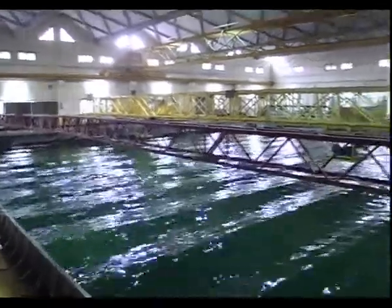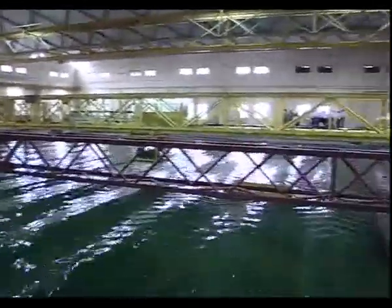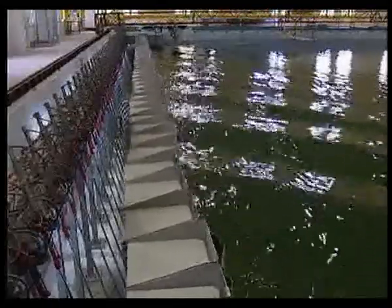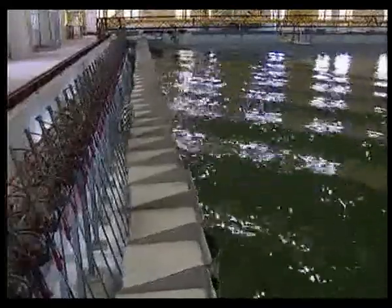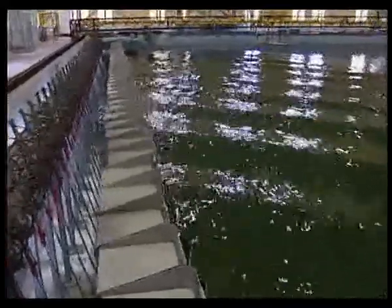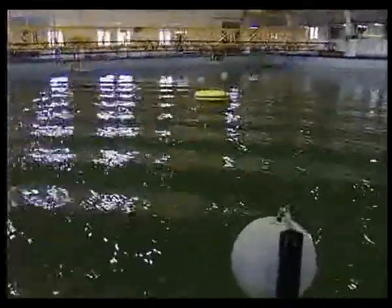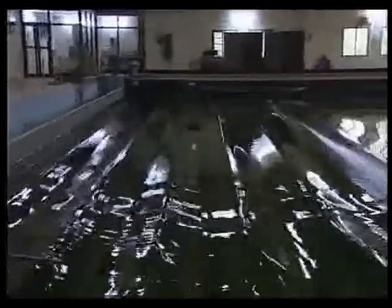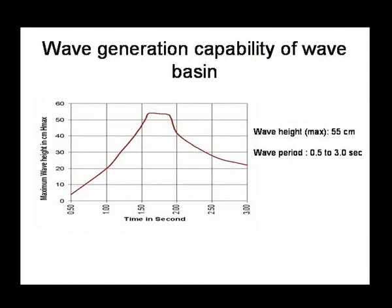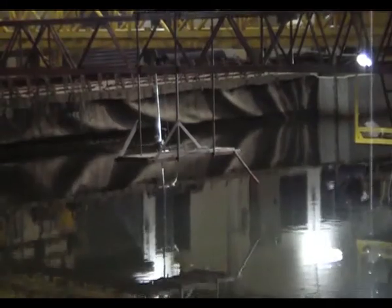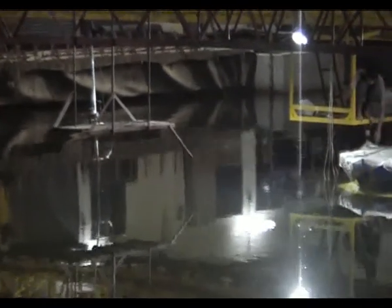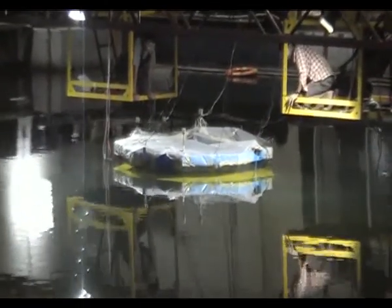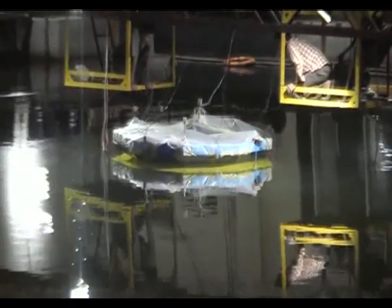The wave basin is a facility to simulate realistic sea conditions. It measures 30 meters by 30 meters and is 3 meters deep. It has a multi-element wave maker on one side consisting of 52 independently controllable wave paddles that can produce oblique sea conditions and random short-crested or multi-directional sea conditions. The basin also has a long-crested wave maker. This is an experiment on a floating production storage and offloading platform, FPSO, carried out in the wave basin.